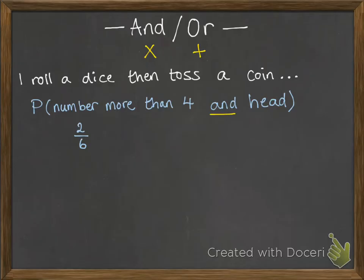Now when tossing a coin, we've got two possibilities. We want to do the number more than four and a head. That means we're going to multiply. The probability of getting a head is a half. So we're going to do two out of six times one out of two. You can pop that into a calculator or you can do this on paper. Most of the time you're going to be using your calculator and that will simplify things down automatically for you. So it gets a final answer of a sixth.